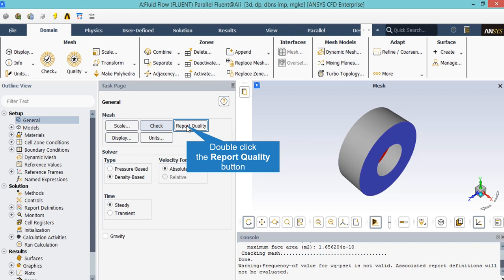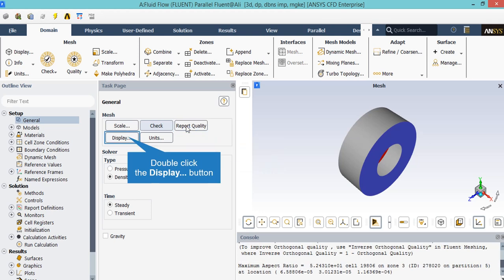For example, you will see that the Fluent software will give you the orthogonal quality and maximum aspect ratio. You may double click on the display dialog box and a new window will appear which gives you the ability to choose between the different parts of your geometry you want to show in the Fluent software.